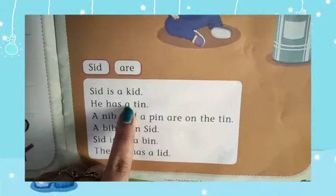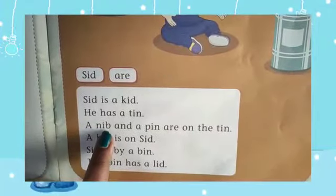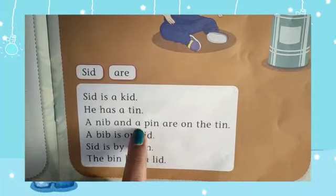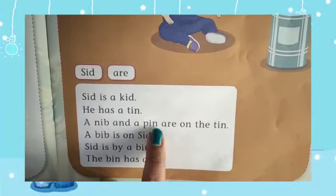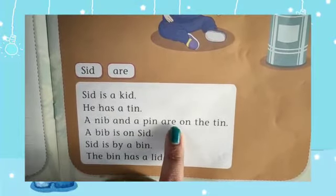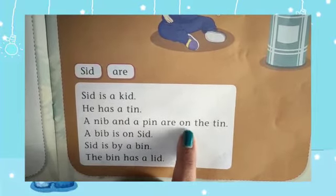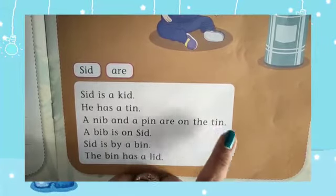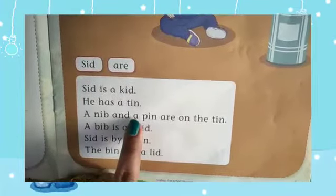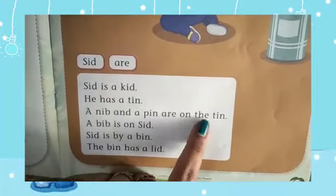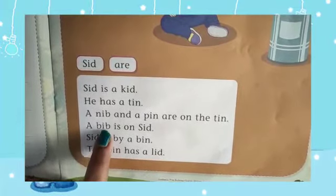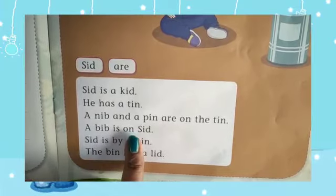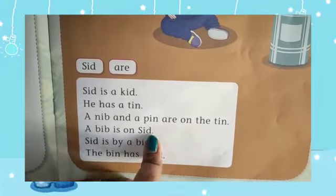A T-I-N tin. He has a tin. A N-I-B nib, A-N-D and, A P-I-N pin, A-R-E are, O-N on, T-H-E the, T-I-N tin. A nib and a pin are on the tin. A B-I-B bib, I-S is, O-N on, S-I-D Sid.